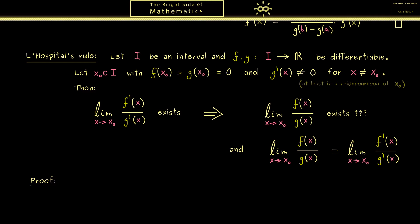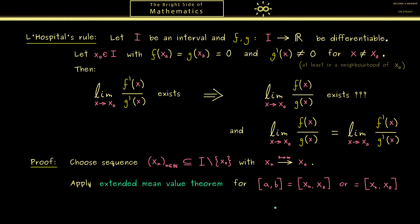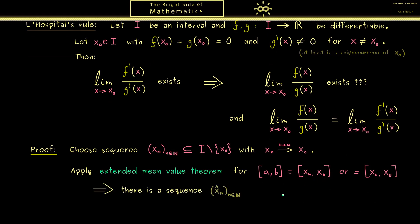We can just immediately apply our extended mean value theorem. In order to do this, please recall that every limit is defined using sequences. Therefore let's choose such a sequence (xₙ) from the interval I which has not the value x₀. However, it should get closer and closer to x₀, so it should converge to x₀. Now the idea is that we apply the extended mean value theorem from above for every n. To put it in other words, the interval [a,b] should now be the interval [xₙ, x₀] or [x₀, xₙ] depending which number is bigger. Most importantly, this means that our point x̂ lies between xₙ and x₀. And because this works for all n in ℕ, we immediately get a whole sequence out.